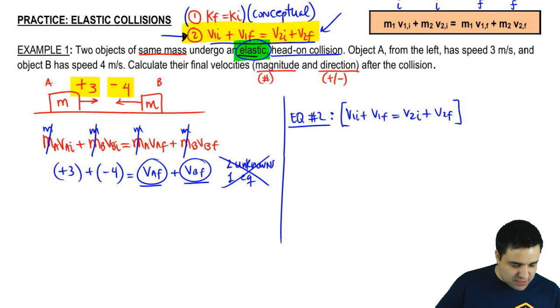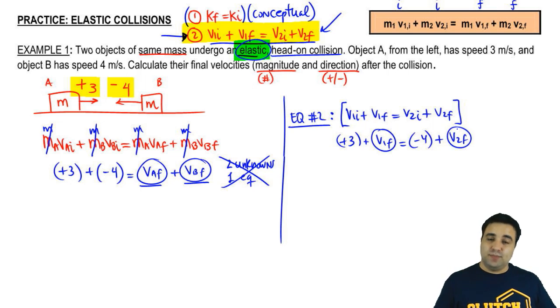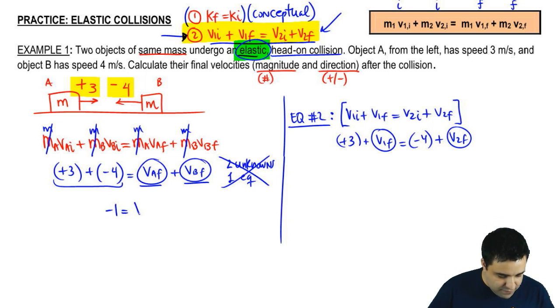All right, so let's plug in the numbers here. The initial velocity here, the initial velocity of 1 is plus 3. The final velocity of 1, I don't have it, and this one is a minus 4, and this one, I don't have it. So, now that I have two equations, I can actually solve this by combining the two equations. So, the first thing I'm going to do is I'm going to combine the numbers and put the variables on the same side. So, 3 minus 4 is negative 1, VA final plus VB final. There's nothing else I can do here for now.